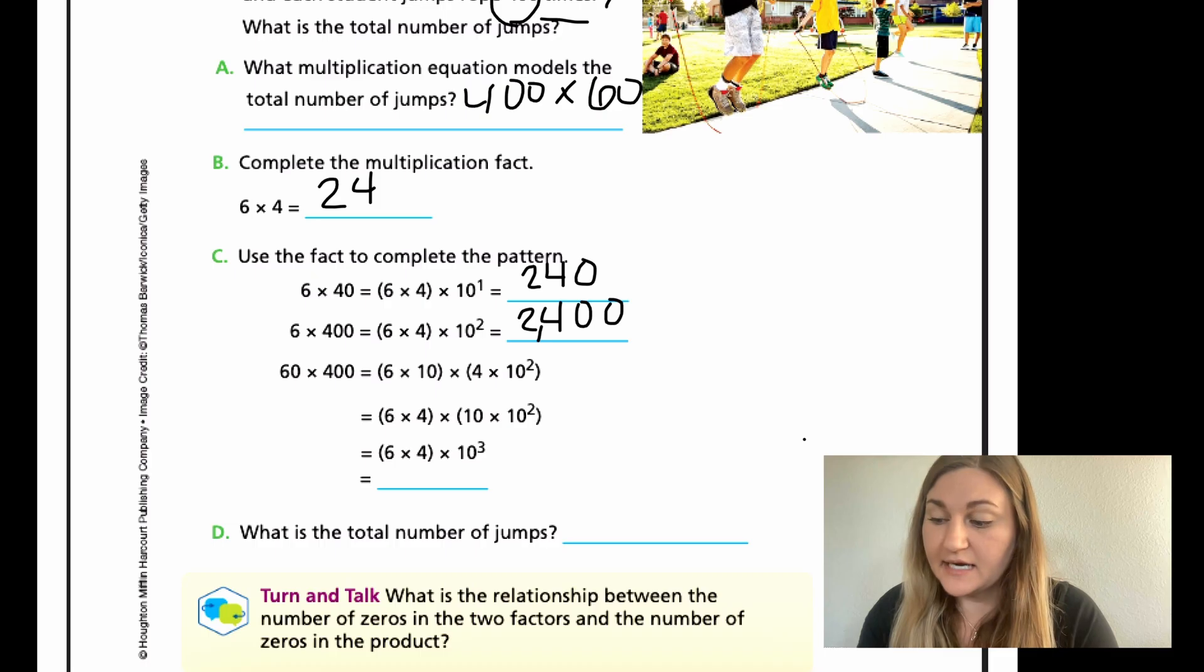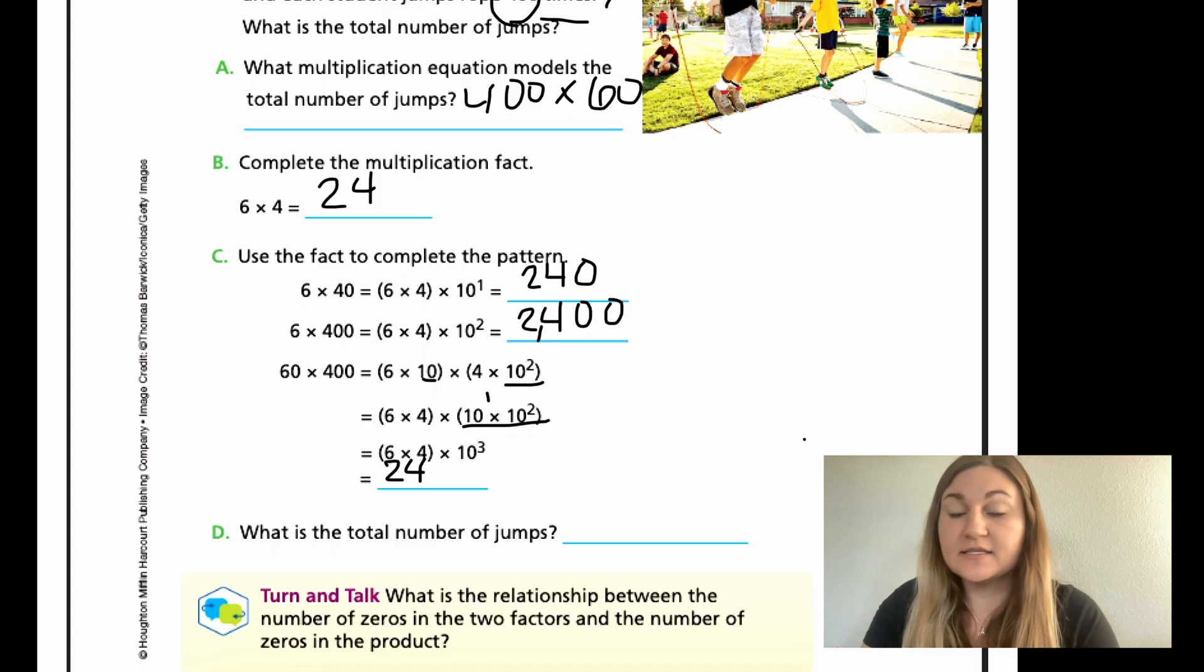Moving down to the next line, I have 6 times 4, which is 24, and then I'm putting my powers of 10 together. If I have 10 to the 1st and 10 to the 2nd, I'm going to add those powers to be 3. So 10 to the 3rd means I have three 0s. So I end up getting 24,000.